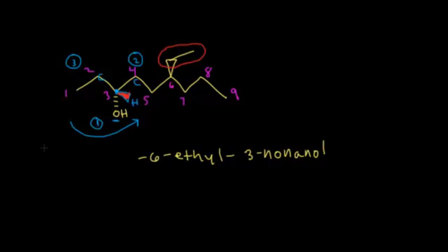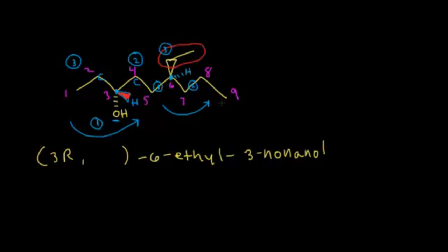Now for carbon 6, another chirality center with a hydrogen going away from us. The chain on the left gets highest priority (it has more carbons and contains an oxygen). Going 1, 2, 3 is counterclockwise, and the lowest priority hydrogen is going away from you, so this configuration is S. The full name is (3R,6S)-6-ethyl-3-nonanol. If this was too fast, review earlier videos on absolute configurations.